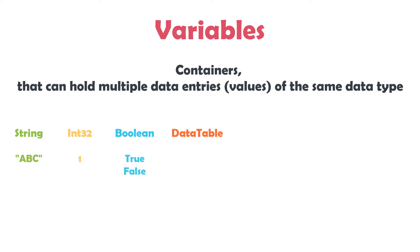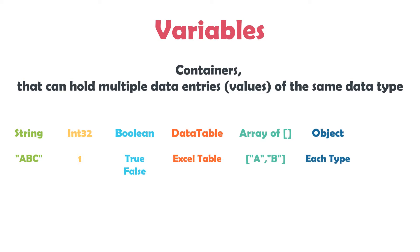The next one is data table, which we can use to store tables consisting of rows and columns, for example an Excel table. The next one is array of different types — for example we can use array of string to store different string variables, and we can use each data type for the array. The last standard data type is object, which can be used to store data of unknown type — for example when I don't know if the data is string or integer.